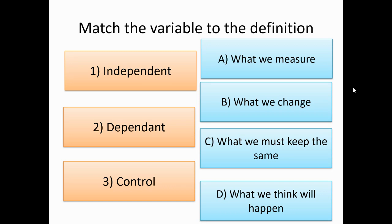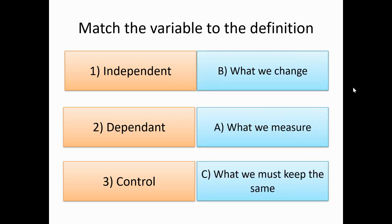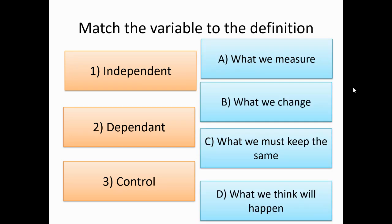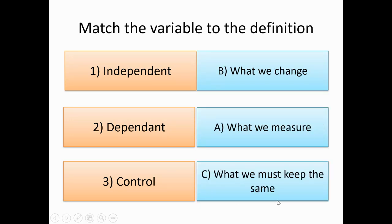Welcome back. The answers are: the independent variable is what we change; the dependent variable is what we measure; and the control variable is what we must keep the same. The trick one was D — 'what we think will happen' — that could perhaps be a prediction. It doesn't fit with either of those.